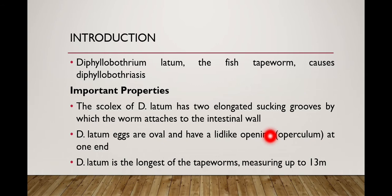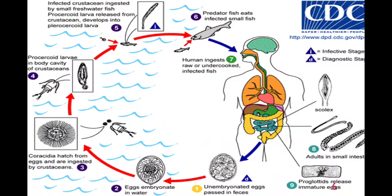Secondly, the eggs (ova) of D. latum are oval and have a lid-like opening known as an operculum. This is a peculiar or special characteristic of the eggs of D. latum, which we will discuss further in the laboratory diagnosis. Additionally, D. latum is the longest of the tapeworms, which can reach up to 13 meters in size.